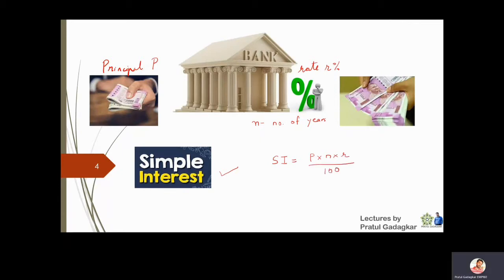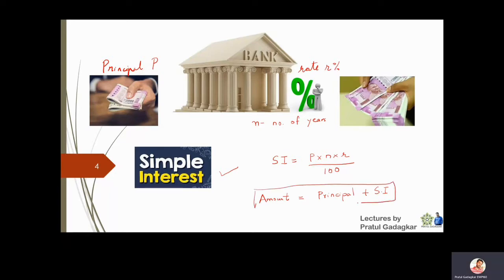That extra money is what you earn. At the end of n years, the total amount you will have is: Amount = Principal + Simple Interest. This is the formula for amount and this is the formula for simple interest.